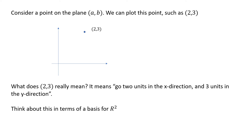We're going to get an idea of a coordinate system. Let's approach this in terms of a two-dimensional space. Consider a point on the plane such as (2,3), and think about what that really means — 2 in the x direction and 3 in the y direction. If we think about this in terms of a basis for R2, a basis is linearly independent vectors that span all of R2, meaning you can build every vector in R2 out of those vectors.